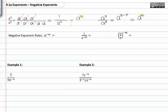Alright, so here are the rules for negative exponents. If you have a to some negative exponent, it's the same as one over a to that positive exponent.